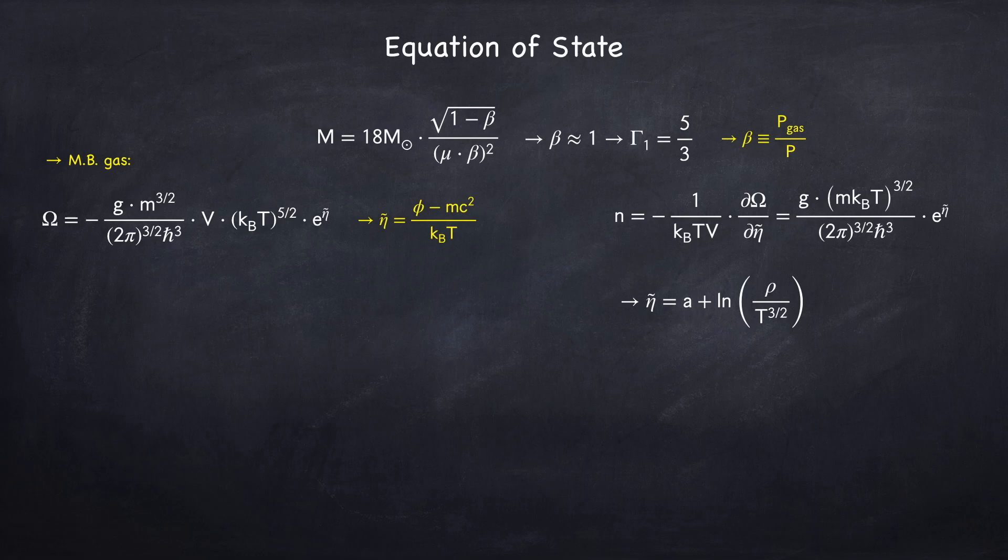So how did I get this? So first I replaced the particle number density with the mass density, rho, and then I divided both sides of the equation by this giant fraction here, and took the log to isolate eta tilde.